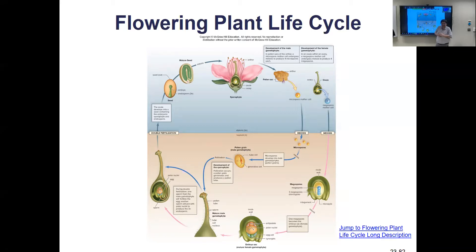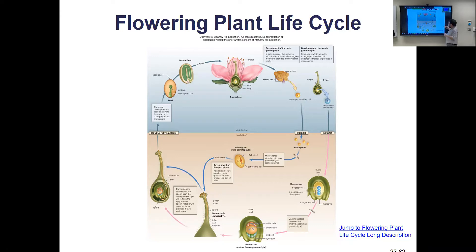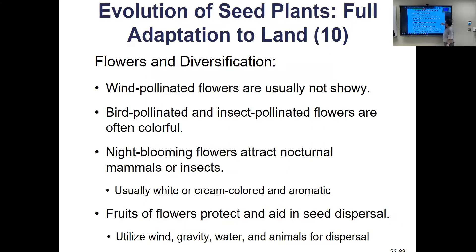If you see silk sticking out of corn, that's where the pollen tube was, and then they pull the corn off — those are the babies. The apple works the same way: the apple swells up, that's the fruit ripening, and it usually has some flavor to attract animals to take it and disperse the seeds.